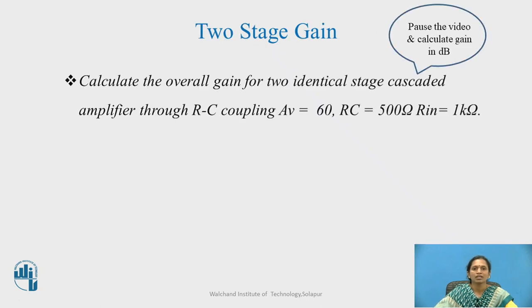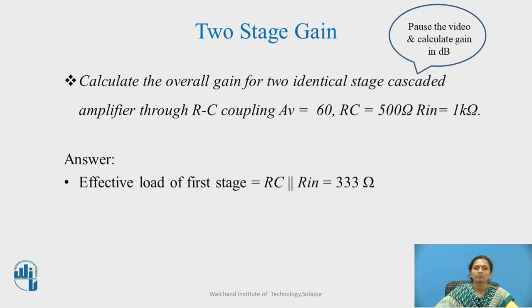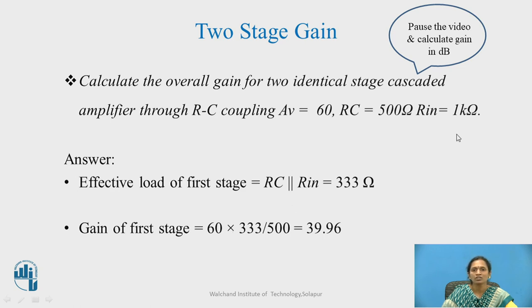When I get the gain of 2 different identical stages one with the same values of RC, Rin and the voltage gain, calculate the gain in dB. I know that effective load for the resistance has to be calculated which is a parallel combination of RC and Rin which comes to 333 ohms. I have the gain of first stage which is equal to 60 times 333 by 500. Gain of the second stage is 60, but my gain of the first stage will be reduced due to the loading effect and that is why I will not get 60 times 60, but 60 times 39.96. Therefore, it is 2397.